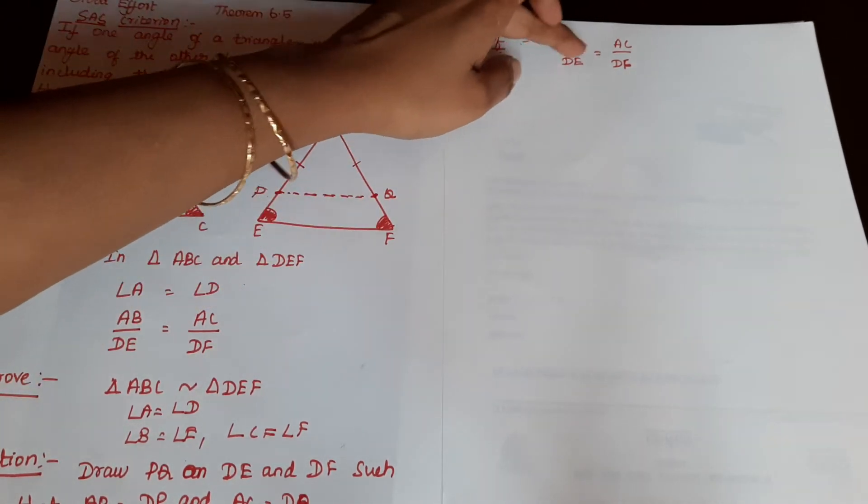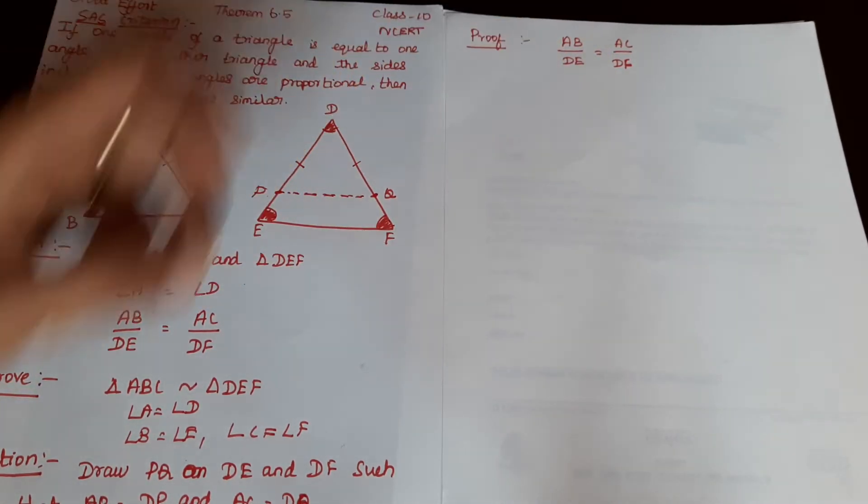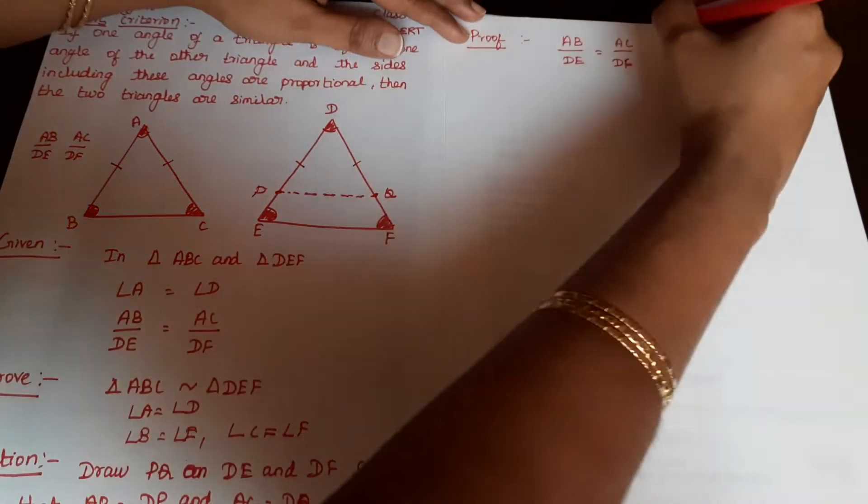AB by DE is equal to AC by DF. This is given.